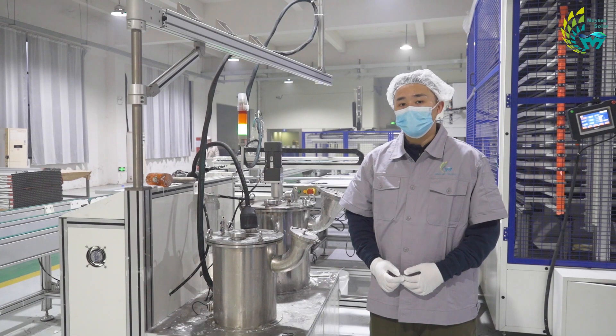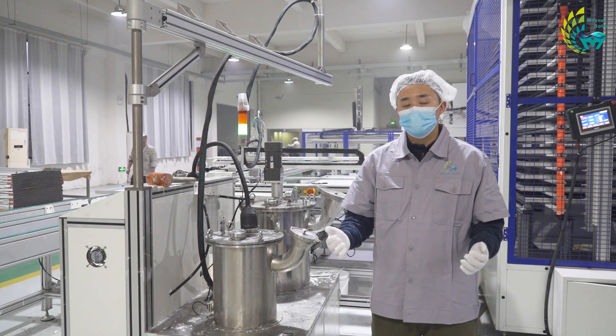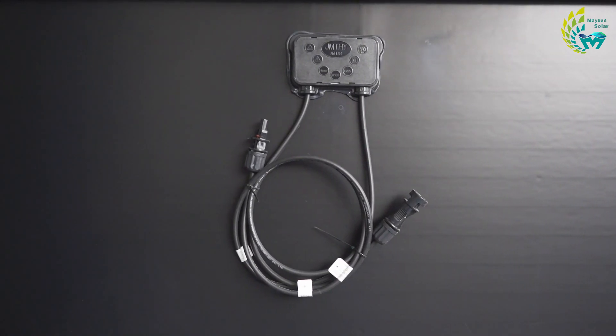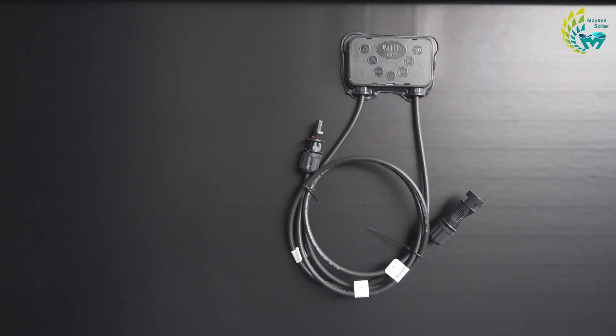There are many types of junction boxes on the market, mainly categorized as one-piece and split junction boxes. One-piece junction boxes contain one or more diodes and positive and negative cables, and generally only one junction box is used for one component.